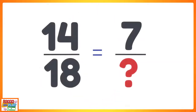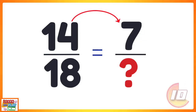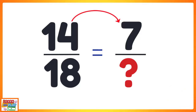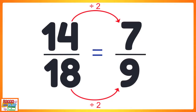Now it's your turn. Find the denominator for the equivalent fraction to fourteen over eighteen, with the numerator being seven. Look at the relationship between the numerators to help you. To get from fourteen to seven, we had to divide fourteen by two. Since this is what we did to the top, we also have to divide the denominator eighteen by two as well. Eighteen divided by two is nine, so fourteen over eighteen is equivalent to seven ninths.